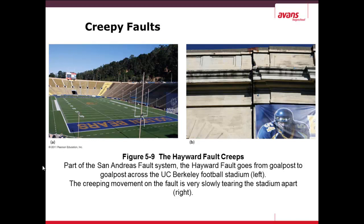Creep faults are very slow-moving faults. Here you see in figure A a photo of the football stadium at UC Berkeley in San Francisco, which is in a quite seismically active area, and in figure B you see the fault going through the stadium, which will eventually probably tear the stadium apart.